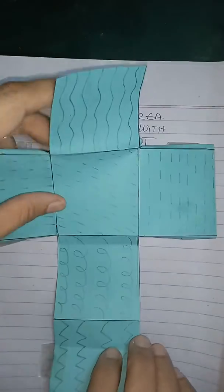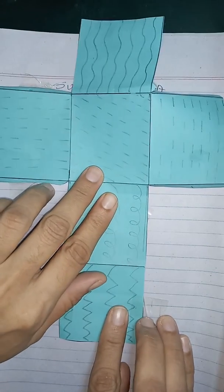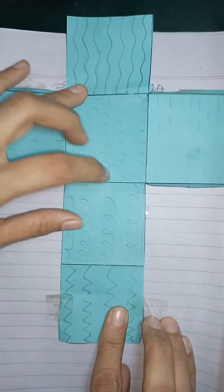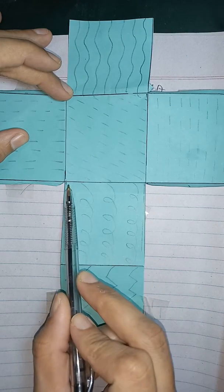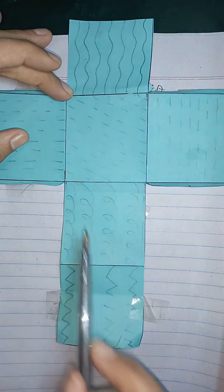The net will be the two dimensional figure. This is the net of the cube. This cube of 6 cm each side.